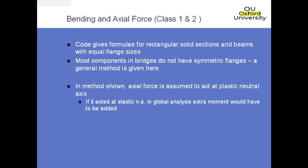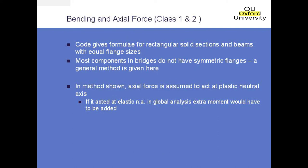In cases where you've got a non-symmetrical section, you have to consider where the axial force determined from the global analysis is assumed to act. This is particularly important as the elastic and plastic bending neutral axis won't be at the same location for the cross section. Using this method, the axial force is assumed to act at the plastic neutral axis in the absence of an axial force. If it acted at the elastic neutral axis, an additional moment would then need to be considered, which would make things a little bit more complicated. So do make sure that you apply it at the plastic neutral axis.